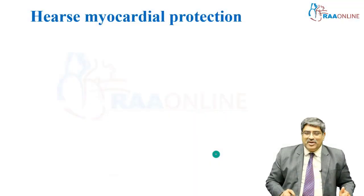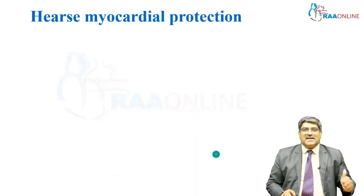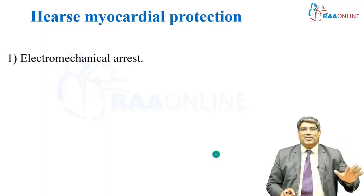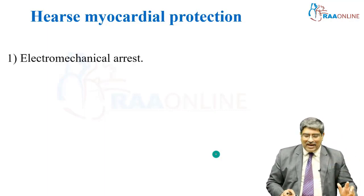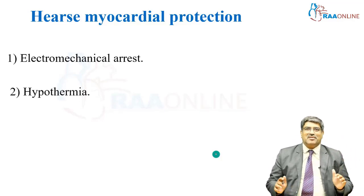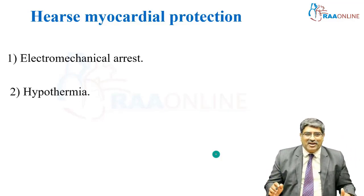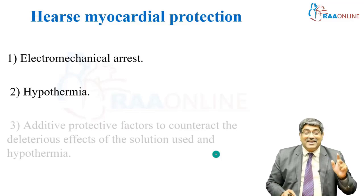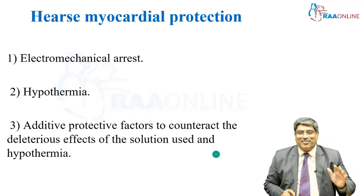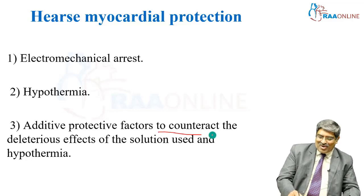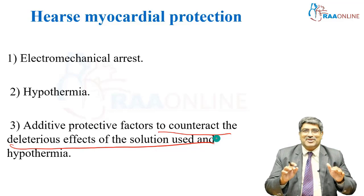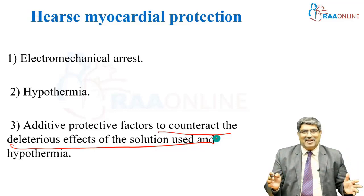There are three important strategies for myocardial protection. First, you have to produce an electromechanical arrest. Second, you have to induce hypothermia as a component of myocardial protection. Third, you have to have protective factors to counter the deleterious effects of the solution used for causing arrest as well as hypothermia.